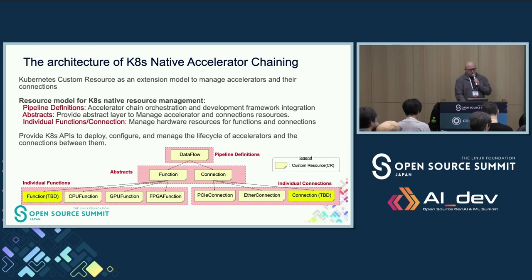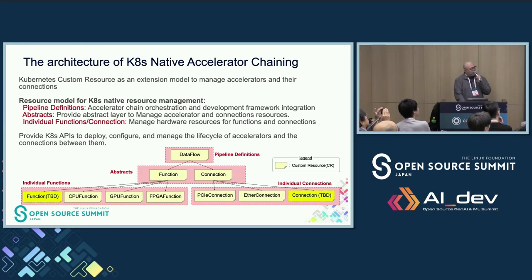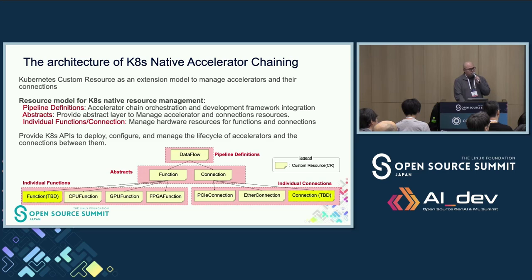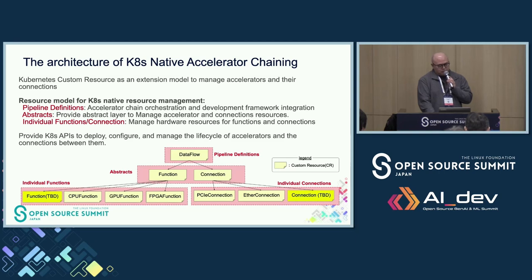We have developed our own controller to chain accelerators to solve those challenges. We use Kubernetes custom resources as an extension model to manage accelerators and their connections. Our resource model has a layer structure. The top-level layer is pipeline definitions, which defines the pipeline to process workloads with accelerator chaining. The second layer is the abstract layer, which manages accelerators and their connection resources. The bottom layer is the individual functions and connections layer, which manages hardware resources for concrete functions and connections. This architecture provides Kubernetes APIs to deploy, configure, and manage the lifecycle of accelerators and the connections between them.